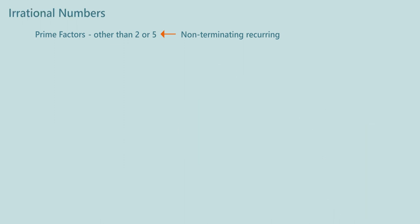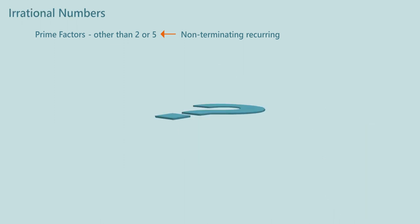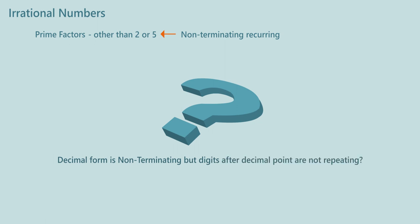That is a good learning. But then there remains a question: is it possible that the decimal form is non-terminating but digits after the decimal point are not repeating? An example is a number like 1.20342709... Then what do we call such a number? Let us explore the name given to these numbers.